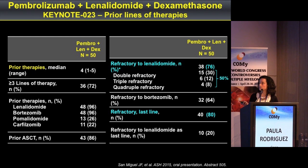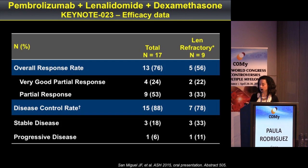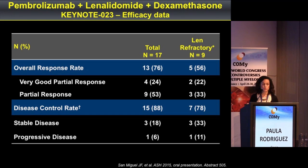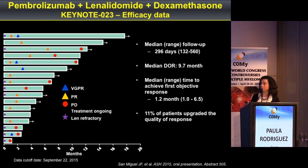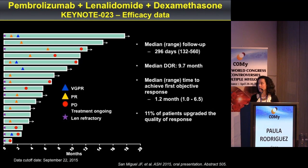Among these patients, 50% were double, triple, or quadruple refractory, and 80% were refractory to the last line of therapy. The efficacy data are still preliminary but encouraging, with a 76% overall response rate in the total population and 56% in patients who were lenalidomide-refractory. With a median follow-up of 296 days, the median duration of response was 10 months, with quite rapid responses at a median of 1.2 months, and 11% of patients upgraded the quality of their response during treatment.